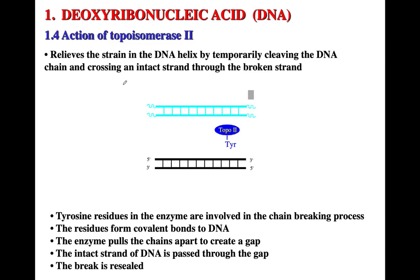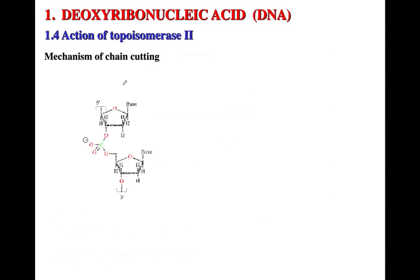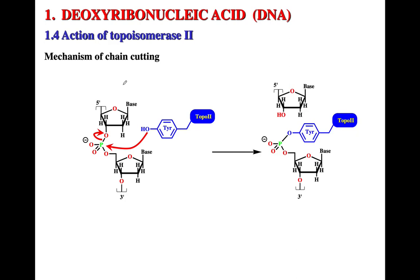At the end of the process, the break is resealed. Looking at the mechanism of cutting: the tyrosine residues attack at the electrophilic position, causing a break of the DNA and generating a covalent bond between topoisomerase and the five prime position of that DNA chain.